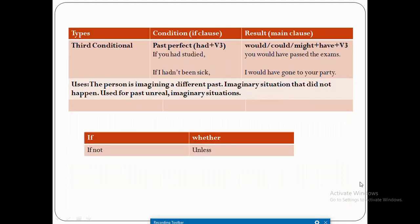Now let's go to conditional type 3, the third conditional. In the if-clause, past perfect means 'had' plus V3. The main clause or result uses 'would', 'could', or 'might' have plus V3. Example: If you had studied, you would have passed the exam. Another example: If I had not been sick, I would have gone to your party. The uses of third conditional involve imagining a different past — imaginary situations that did not happen — used for past, unreal, imaginary situations.